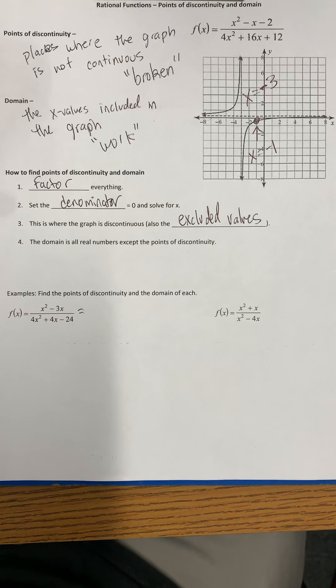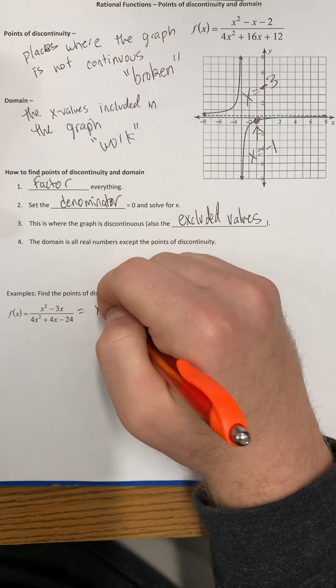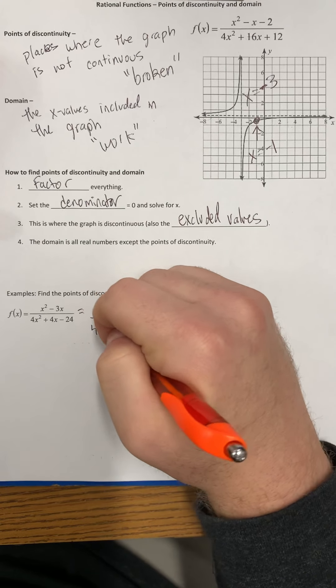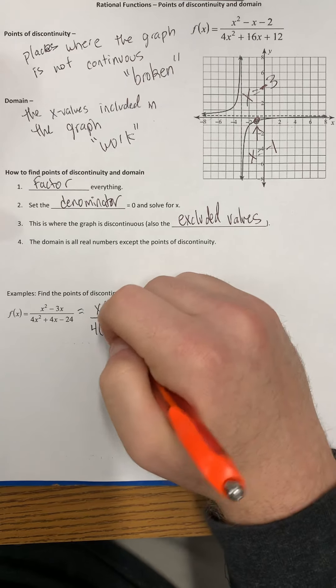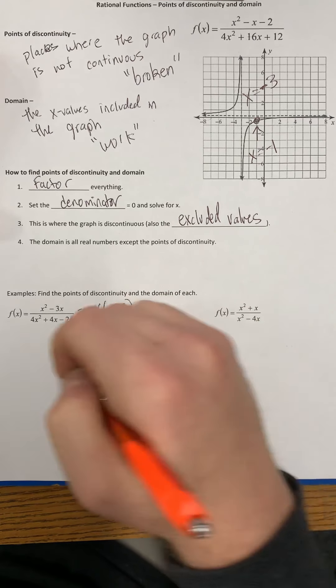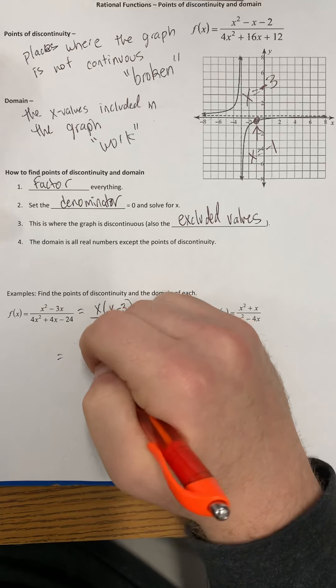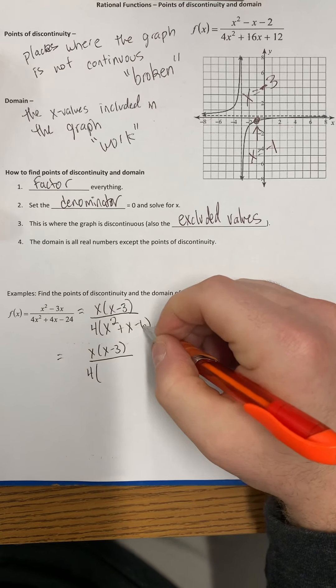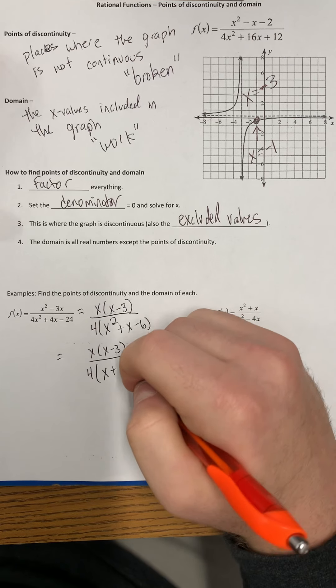If we were to factor the numerator of our example here, x squared minus 3x, we can divide that by an x, we're left with x minus 3. The denominator we can divide by 4, we're left with x squared plus x minus 6. We factor that again. What can we multiply to get negative 6 that adds to give us positive 1? That would be positive 3 and negative 2.